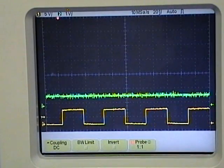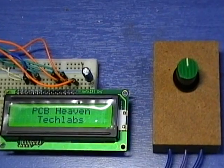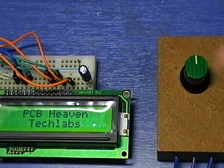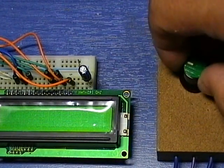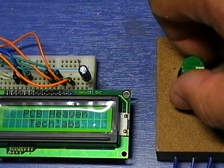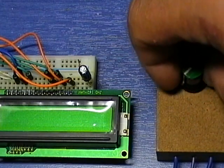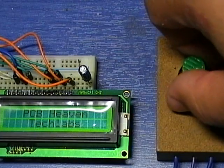With this simple solution, I can now have digital adjustment for the contrast and the backlight of the LCD. Thank you for watching this video and don't forget to visit my website for more interesting circuits.